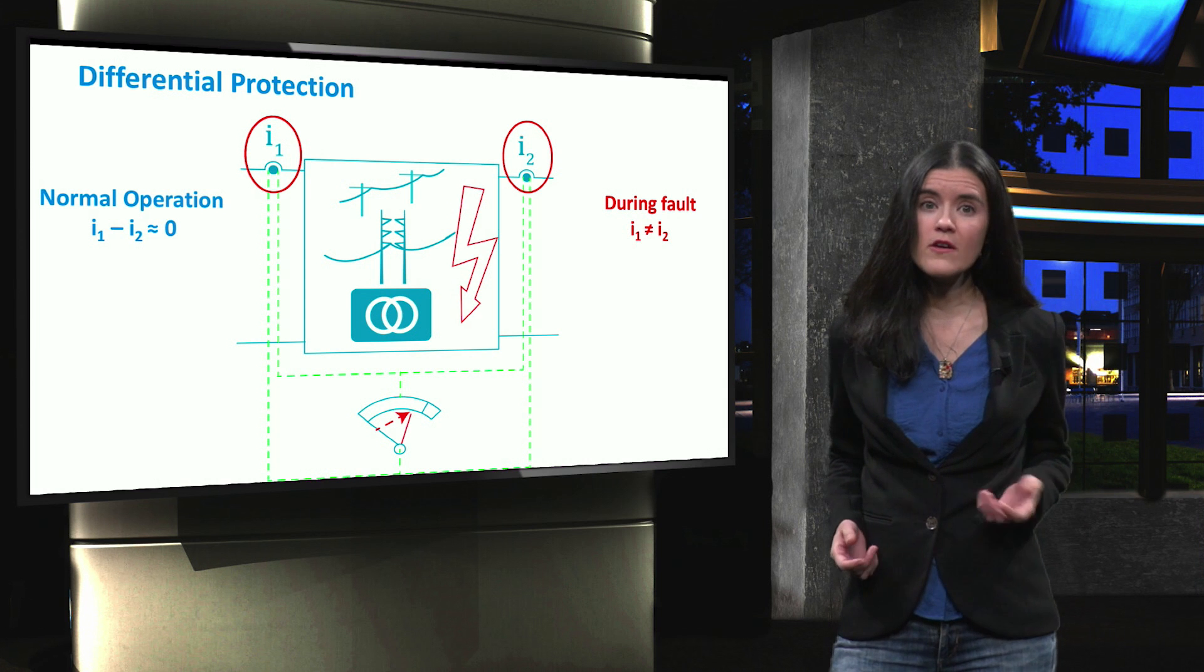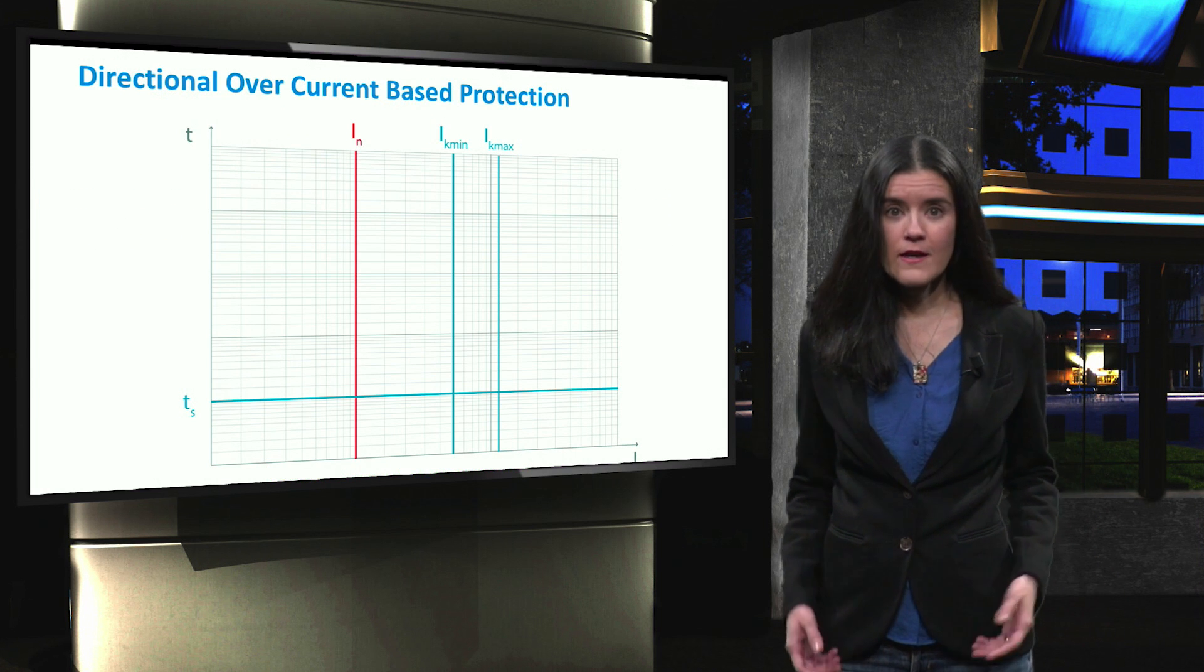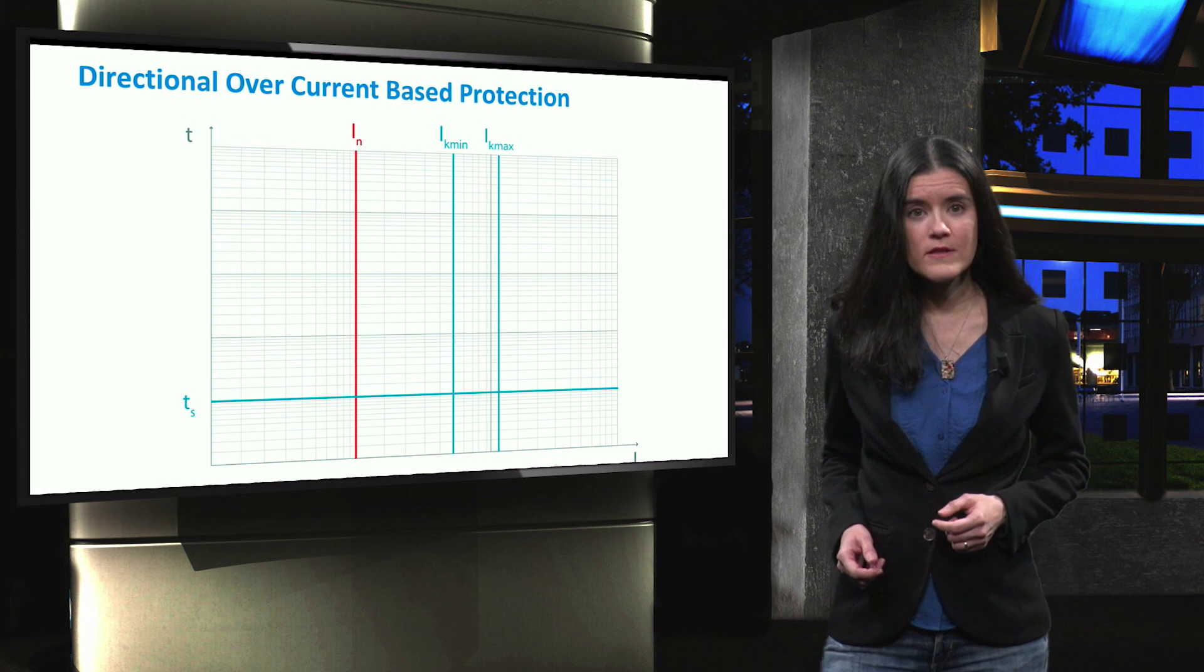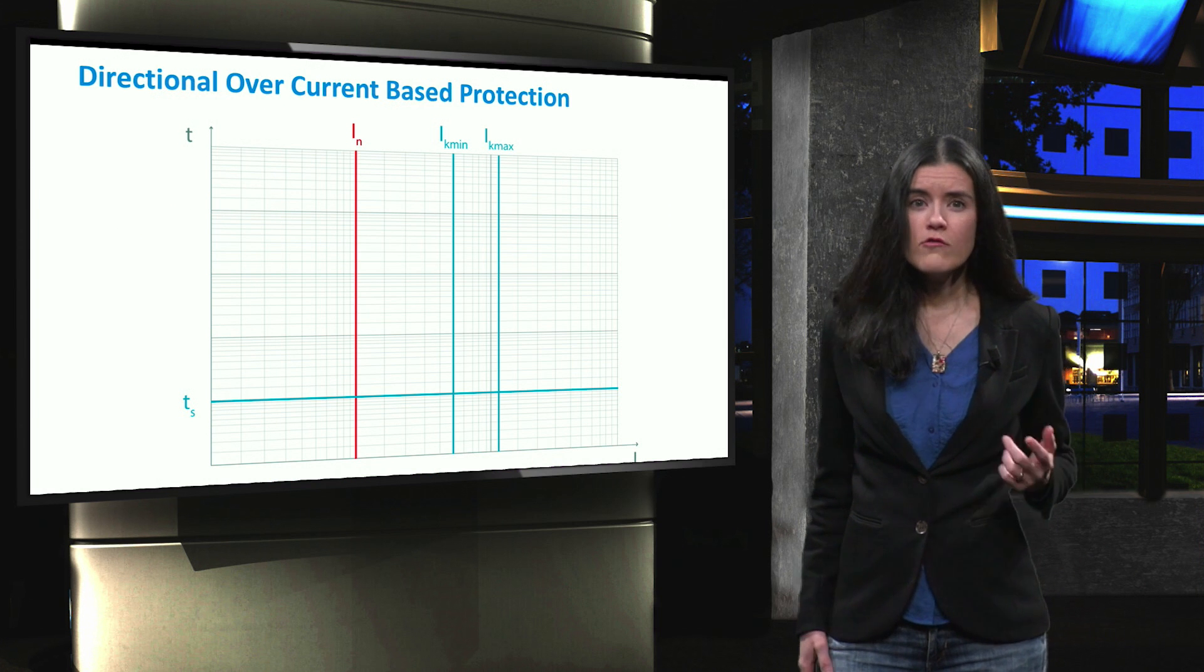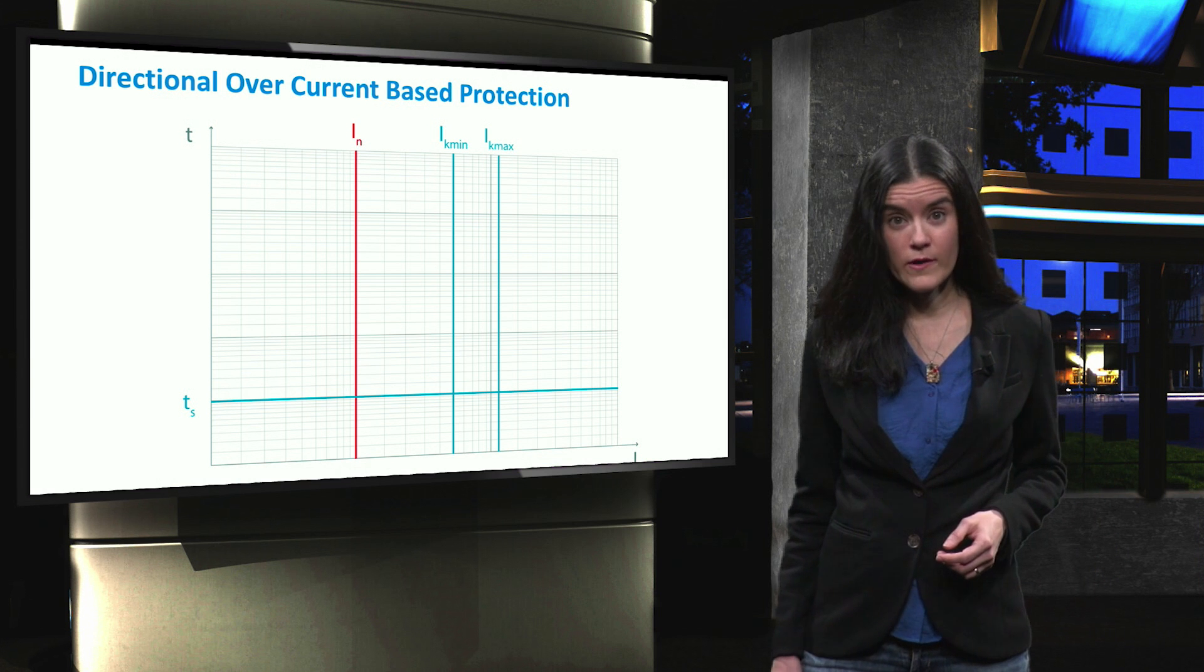In microgrids, the faulty current can be generated from different sources and can be in more than one direction. This leads to the use of directional overcurrent units, usually to determine the faulty feeders, which usually feed several distribution generators.